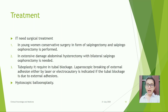Treatment: initiate surgical treatment. In young women, conservative surgery in the form of salpingectomy and salpingo-oophorectomy is performed. For extensive disease, abdominal hysterectomy with bilateral salpingo-oophorectomy is needed. Tuboplasty is required in tubal blockage. Laparoscopic breaking of external adhesions by laser or electrocautery is indicated when tubal blockage is due to external adhesions. Hysteroscopic balloon tuboplasty is also an option.